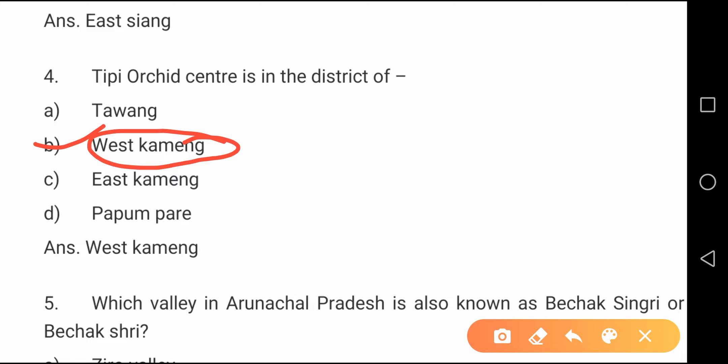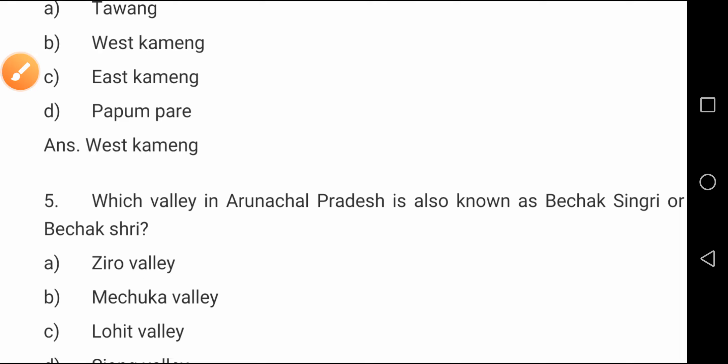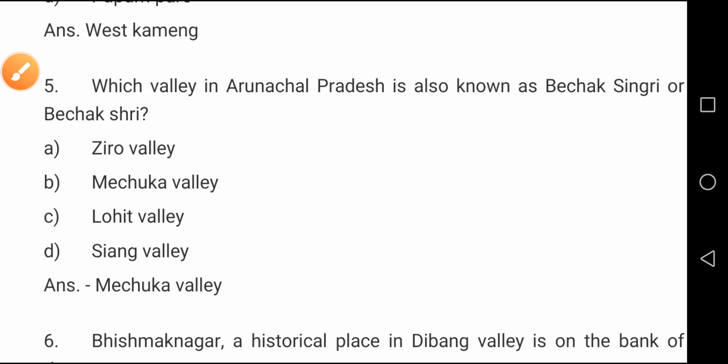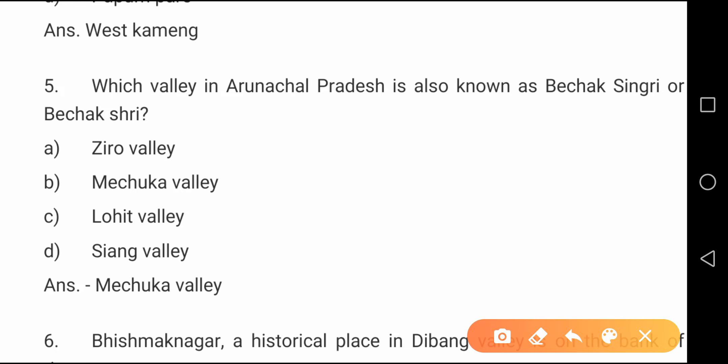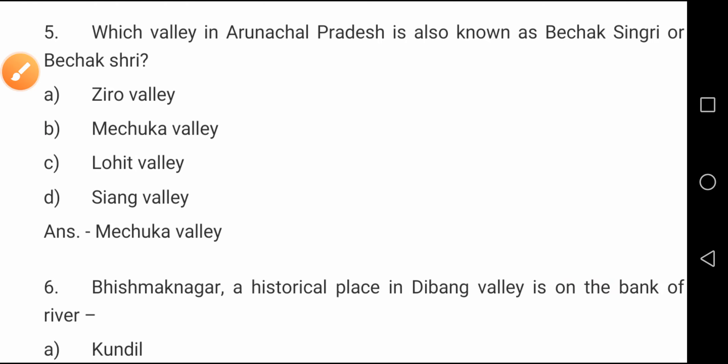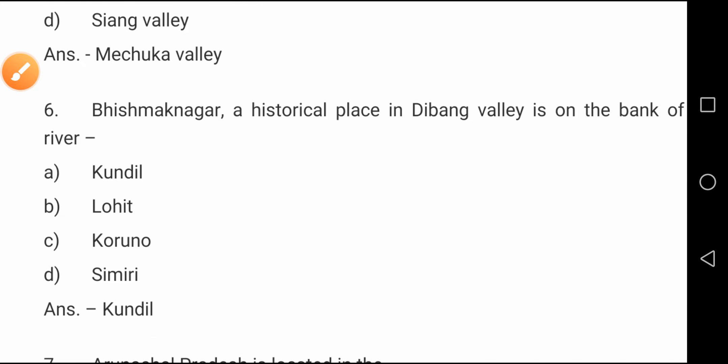Question number five: Which valley in Arunachal Pradesh is also known as Bechak Sangri or Bechak Shri? The answer is option B, Mechuga Valley. It is also known as Bechak Sangri.